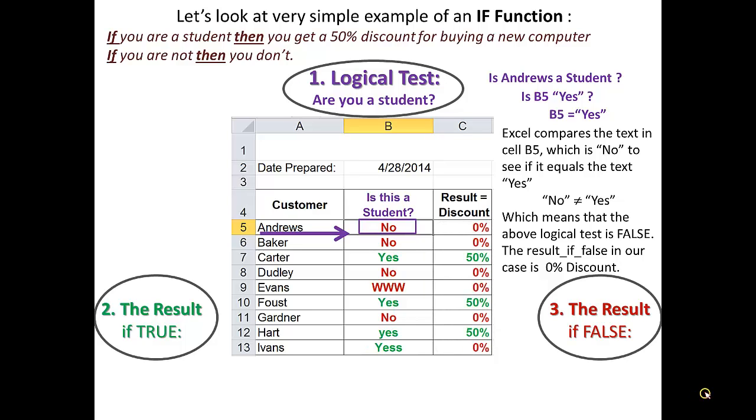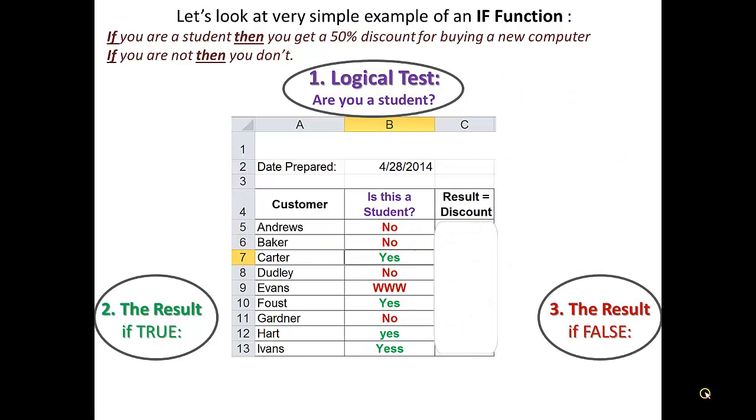Let's repeat the thinking process one more time. This time, let's jump to the third record for the customer Carter, and see how the IF function thinks for someone who is a member. Is Carter a student? We look and we see that the answer for this question is in cell B7. Then, our question becomes, is cell B7 yes?